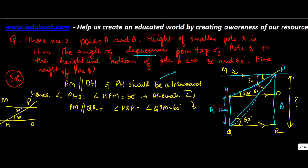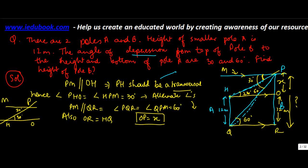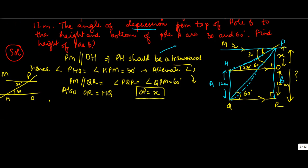So this angle becomes 60 degrees. Also, OR equals QR, which is 12 meters — so this side is also 12 meters. Let's call OP as X. Now we can apply our trigonometric ratios. In triangle OPH, this angle is 30 degrees.